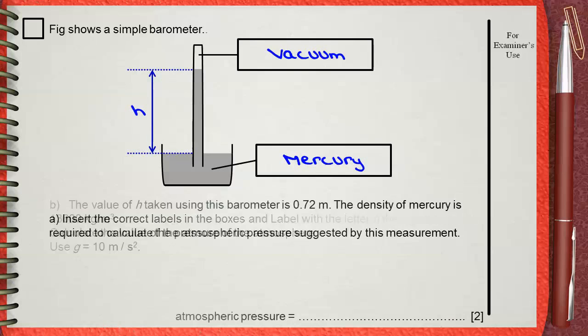Part B: The value of H taken using the barometer is 0.72 meters. The density of mercury is 13,600 kilograms per meter cubed. Calculate the value of the atmospheric pressure suggested by the measurement. Use g equals 10 meters per second squared.